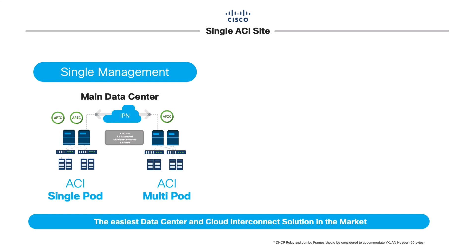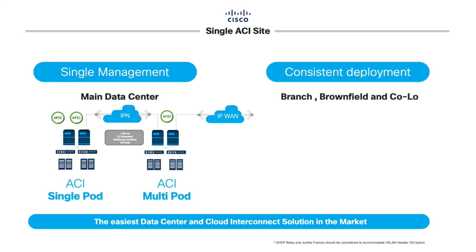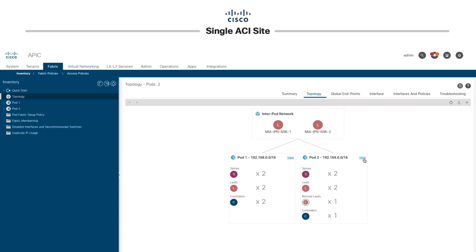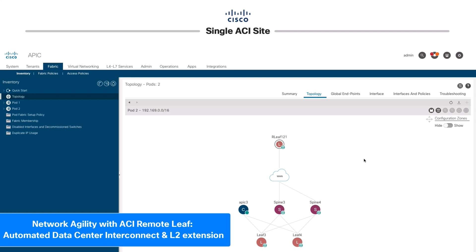To support multi-pod, the intermediate routed network separating each pod should have no more than 50 milliseconds of round-trip time, support jumbo frames due to VXLAN encapsulation, and support multicast. If you have a small location or brownfield in your network and need to extend Layer 2 while maintaining centralized management, remote leaf is also a great ACI implementation option. Instead of installing a full ACI pod with spines, leaves, and APICs, you can deploy a couple of Nexus 9000 leaves at that remote location — all it needs is a routed connection with less than 300ms round-trip time plus DHCP relay. ACI can aggregate up to 64 remote leaf pairs and no multicast is needed.